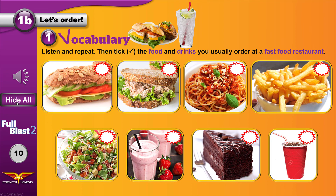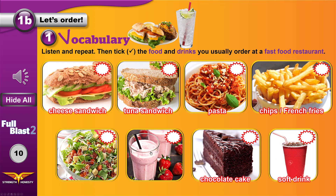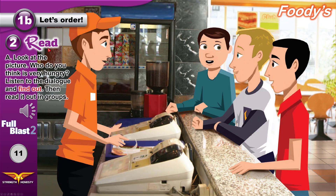Now, if I hide all the captions, can you name these different types of food? Tuna sandwich, pasta, chips or French fries, soft drink, chocolate cake, milkshake, salad. Now, what do you usually order at the fast food restaurant? I usually order tuna sandwiches, pasta, cheese sandwiches and salad. What about you?